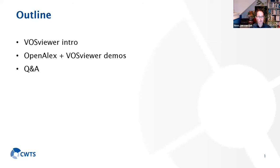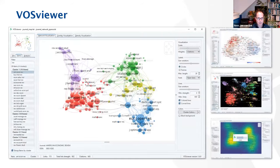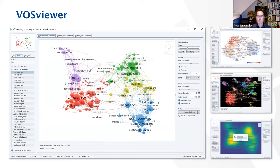I would like to start with an introduction into VOSViewer very briefly, and then we will go to live demonstrations where I will demonstrate how we can use VOSViewer to visualize openly available data from OpenALEX. Afterwards, we have plenty of time for Q&A. VOSViewer is a software tool that can be used to analyze and visualize scientific literature. The tool can, for example, be used to get a quick overview of the main topics discussed within a research field and to see how those topics are related to each other.